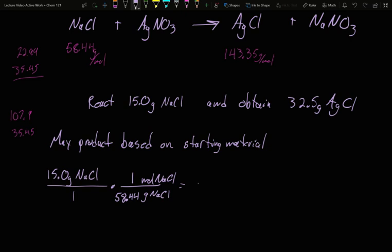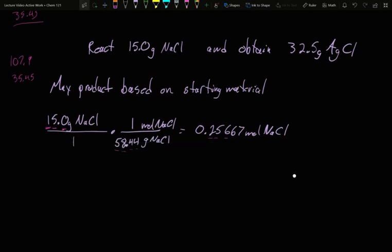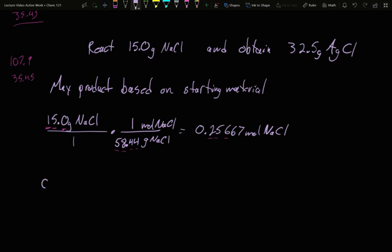So I have 15 out of almost 60, so I should have about a quarter. And indeed, if you add this up, it's 0.25667 mole of NaCl. And realistically, we started with three sig figs. Molecular mass had four, so we're still floating three sig figs. Well, I have my moles of sodium chloride. My next step is to convert moles of my starting material into moles of my product. How much product could I have made?